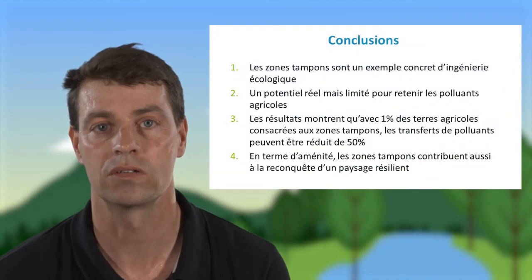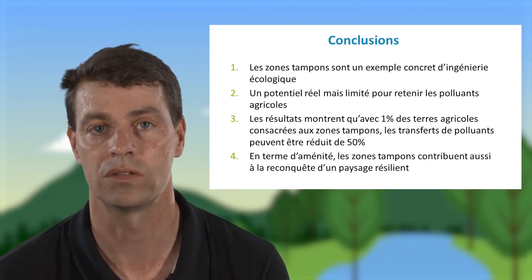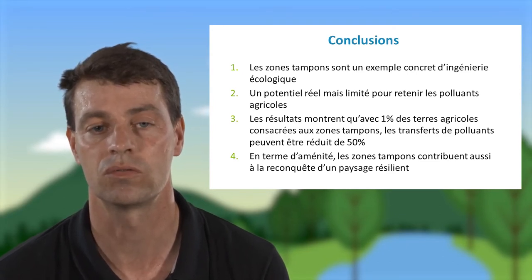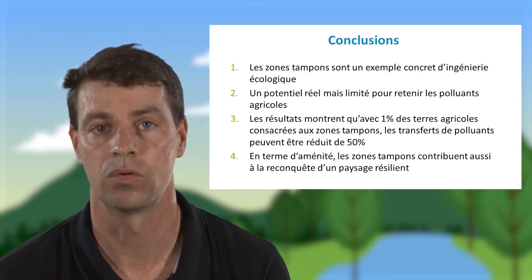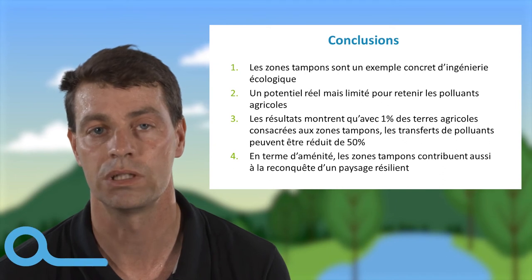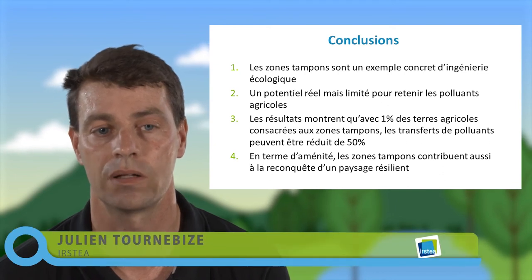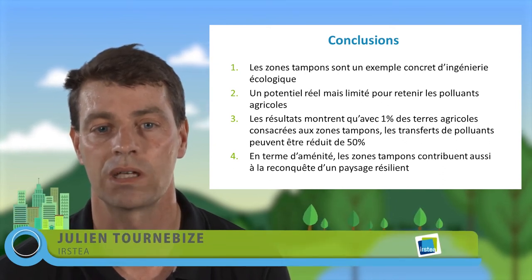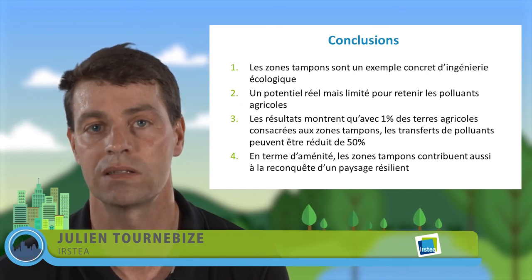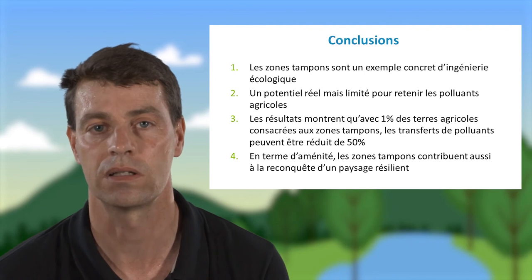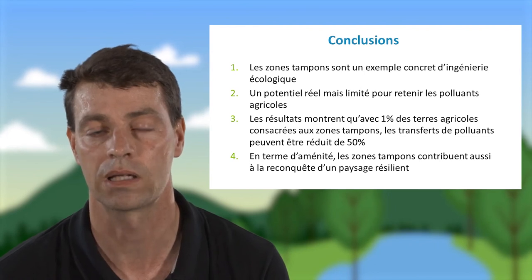En termes de conclusion, les zones tampons sont un exemple concret d'ingénierie écologique au service des fonctions de régulation des flux. Il y a un potentiel réel mais limité pour retenir les polluants, fortement variable selon l'année hydrologique et selon la température. Les résultats montrent qu'avec 1 % des surfaces en terre agricole consacrées aux zones tampons, les transferts de polluants peuvent être réduits jusqu'à 50 %.